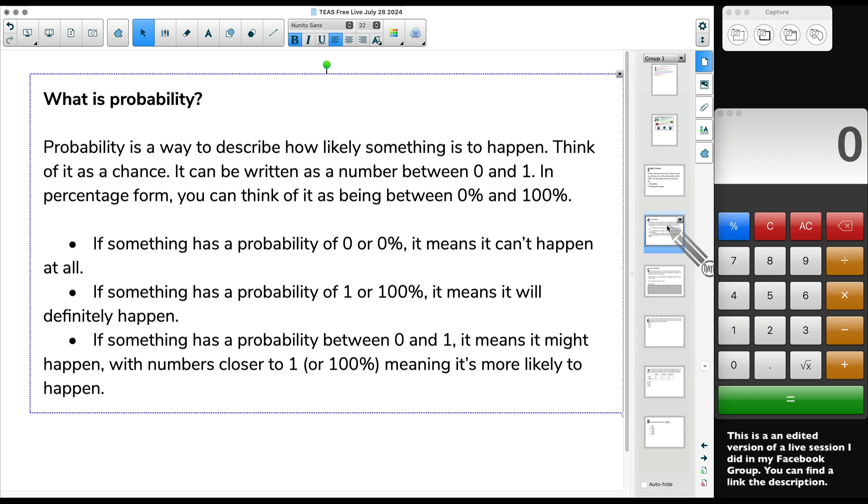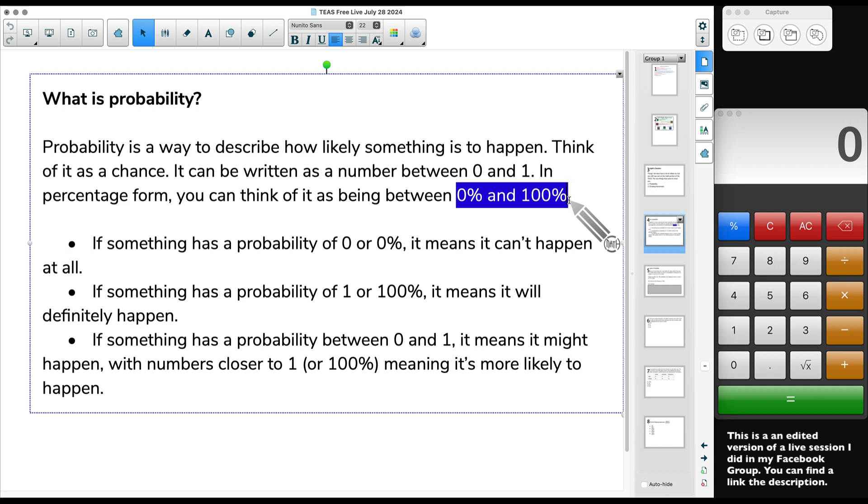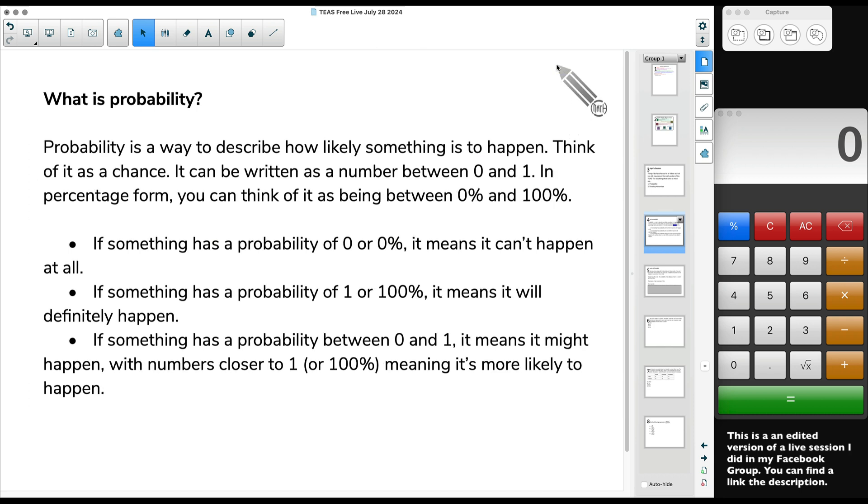Before I give you an example, I want to talk about what probability is. First of all, probability is going to be anywhere in between 0% and 100%. But we could also just say anywhere between 0 and 1. And you might say, well, how is 0 and 1 the same thing as 0% and 100%? Well, 0 and 1 are the decimal representations. But probably most of us, when we hear probability, we probably hear it in percentages.